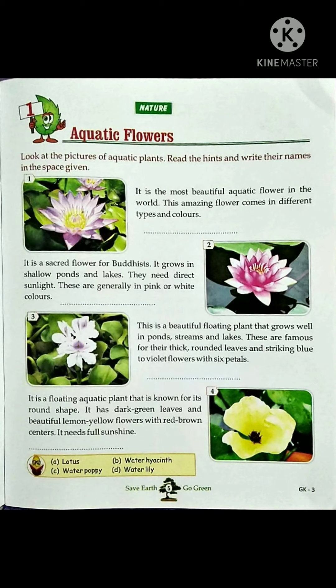They need direct sunlight and are generally pink or white in color — that is lotus. Third: this is a beautiful floating plant that grows well in ponds, streams, and lakes, famous for its thick rounded leaves and striking blue and violet flowers with six petals — water hyacinth. Fourth: a floating aquatic plant known for its round shape, dark green leaves, and beautiful lemon yellow flowers with red-brown centers, needing full sunshine — water poppy.